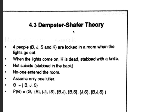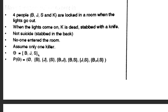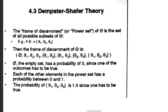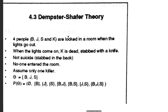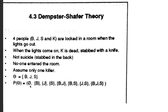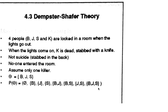Now let us come to the example. There are 4 people — B, J, S, K — locked in a room. The light goes out and K is found dead, stabbed by a knife. Not suicide, no one entered the room. Assume only one killer. So our belief theta is either B, J, or S. You have to make the power set, or frame of discernment. The power set would be: no one, B, J, S, B or J, B or S, J or S, or B or J or S.